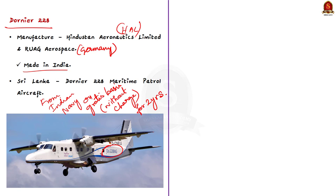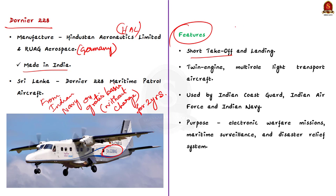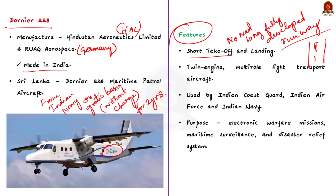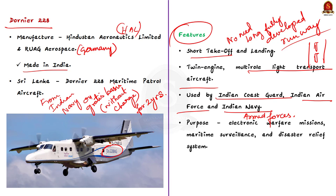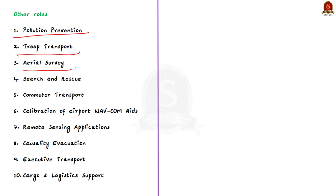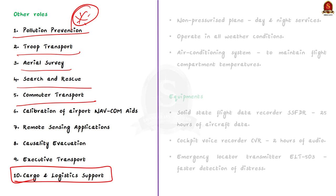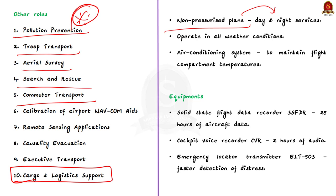Now let us see the features of the aircraft. It is a short takeoff and landing aircraft, meaning it requires very short runways. It is capable of operating out of semi-prepared runways and is a twin-engine multi-role light transport aircraft. It is used by the Indian Coast Guard, Indian Air Force, and Indian Navy for electronic warfare missions, maritime surveillance, and disaster relief. Other purposes include pollution prevention, troop transport, aerial survey, search and rescue, commuter transport, and cargo and logistics support. It is a non-pressurized plane capable of day and night services and can operate in all weather conditions including high temperature or high humidity.